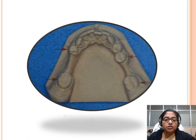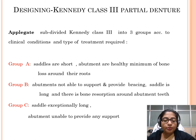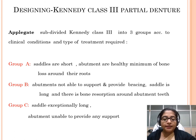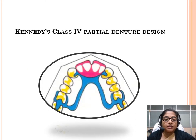Kennedy's Class 3 is quite straightforward with a quadrilateral design configuration and two terminal abutments on each side. Applegate has subdivided Class 3 partial dentures into three groups: Group A — very short saddles, healthy abutments, and minimum bone loss; Group B — abutments unable to fully support the denture, long saddle span, and bone resorption around abutment teeth; Group C — an exceptionally long saddle where abutments are unable to provide any support. Different design factors must be considered for each group.